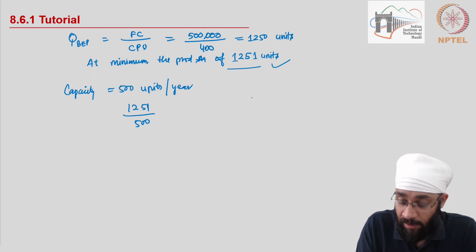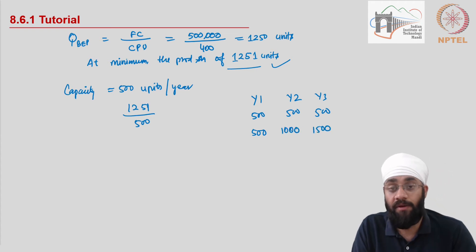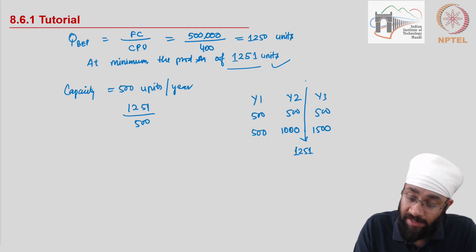So if you look at a timeline, this is year 1, year 2, so 500, 500, and year 3, 500. And if you look at cumulative numbers, then you will have 500 done in the first year, you will have 1,000 done in the second year, and 1,500 done at the end of third year. So somewhere in between here you will clock 1,251 units and that is when you will start making profit.